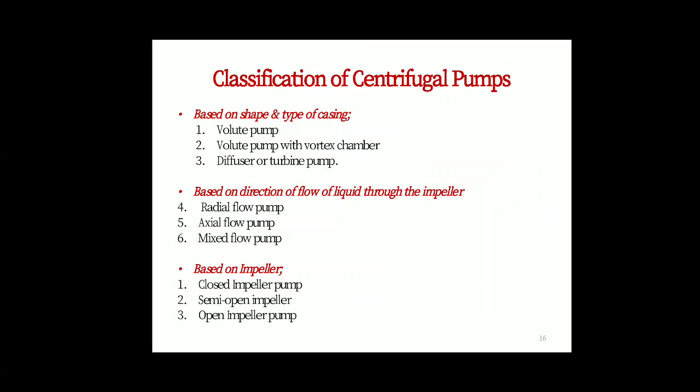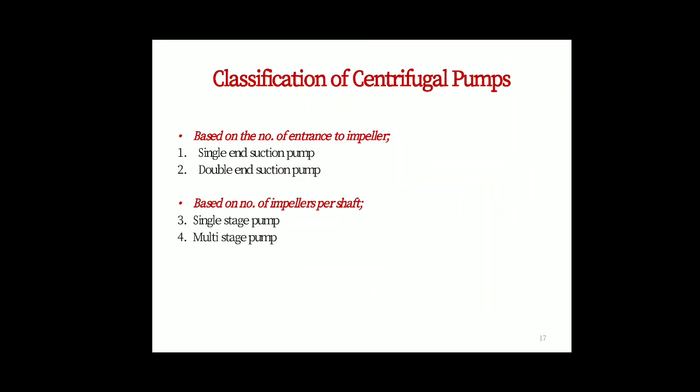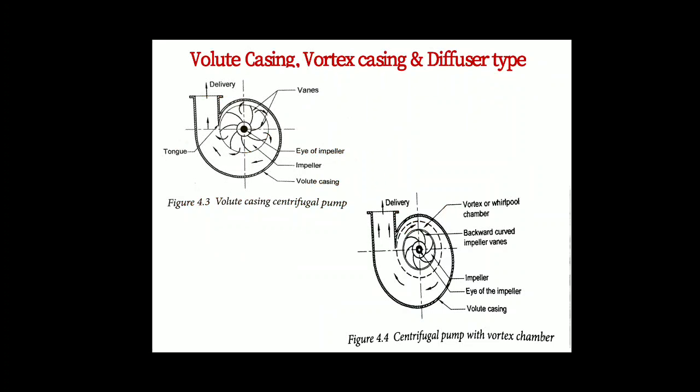Centrifugal pumps are classified based on shapes and type of casing: volute pump, volute pump with vortex chamber, diffuser. Based on direction of flow liquid through the impeller: radial flow pump, axial flow pump, mixed flow pump. Based on impeller: closed impeller pump, semi-open impeller pump, open impeller pump. Based on number of impellers: single end suction pump and double end suction pump. Based on number of impellers per shaft: single stage pump and multi stage pumps.